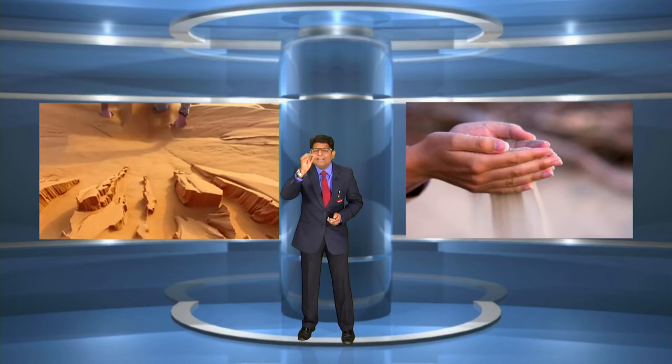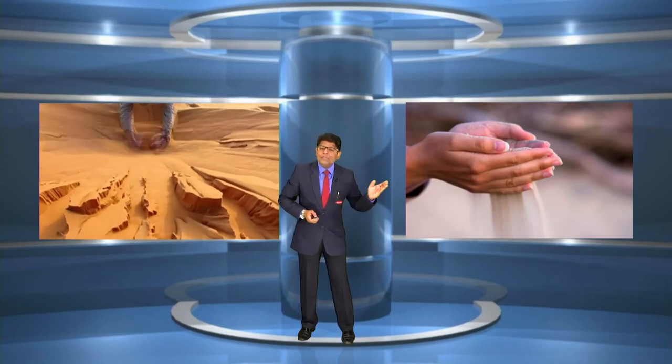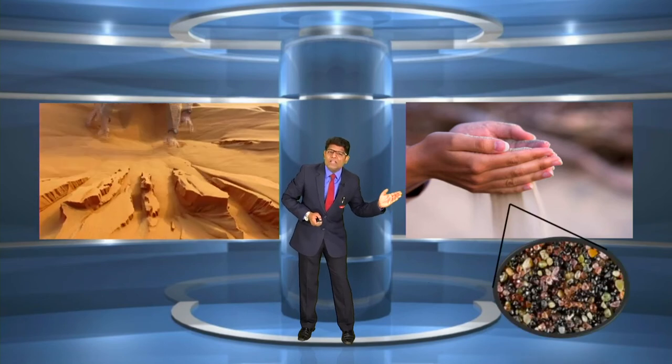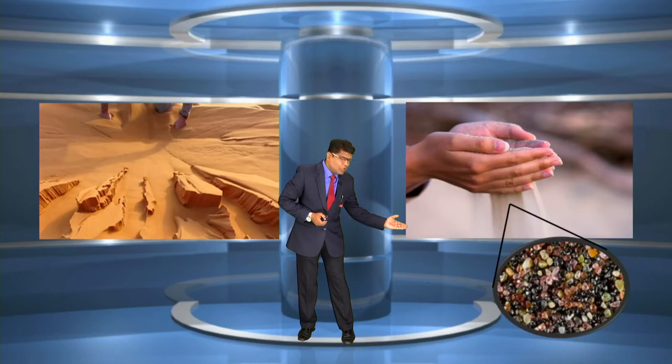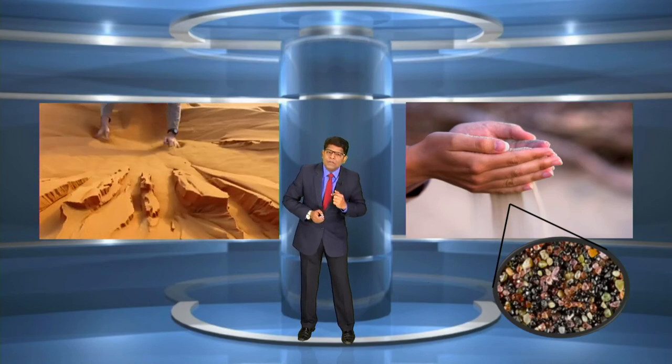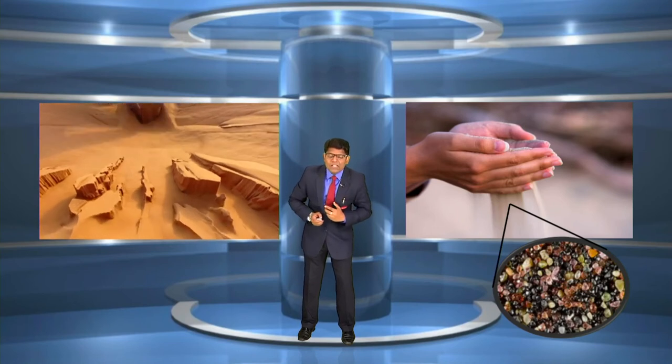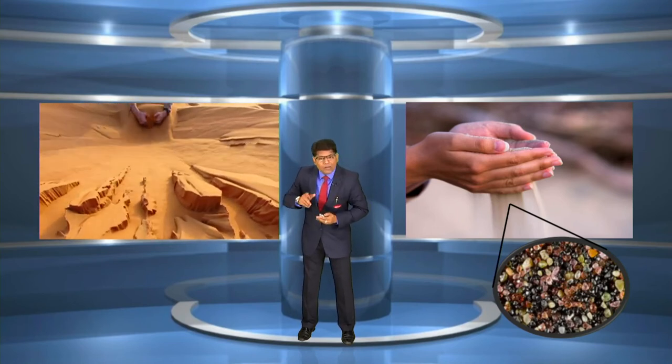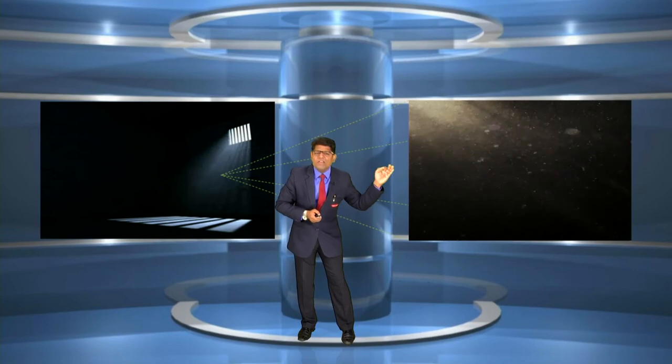Sand particles are very, very small. When viewed under a microscope, they look like this. These smaller particles of sand can further be divided into even smaller particles. Sometimes in a room there are dust particles we cannot see, but if a beam of sunlight comes into the room, you can see the dust particles in that beam of light. These are very, very small.